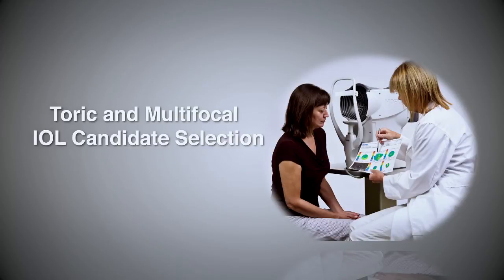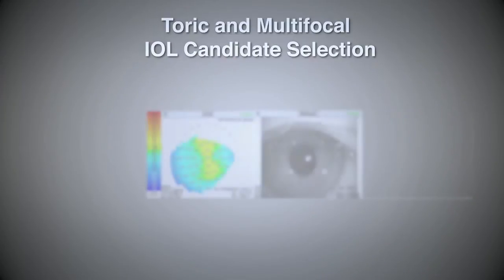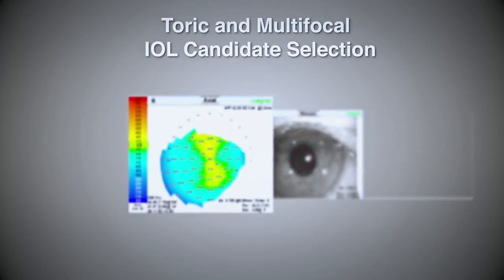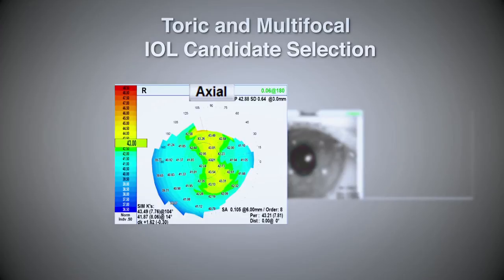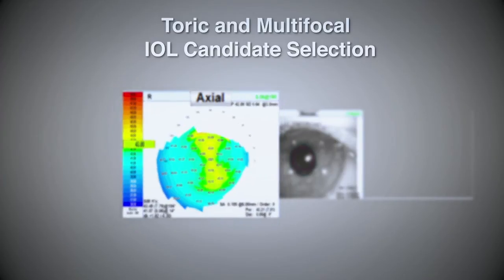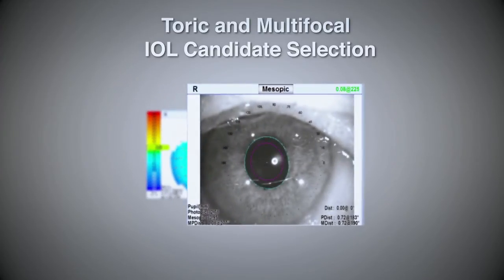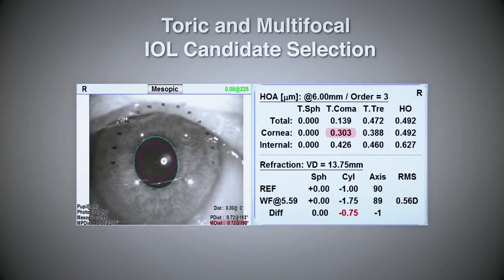The best surgical outcomes can be assured when implementing premium and toric IOLs with the OPD Scan 3. The axial map can be used to determine if a patient is a good candidate for a toric IOL. Checking the angle kappa and corneal coma will help best select multifocal IOL candidates.